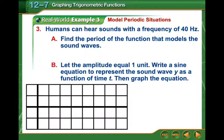The next one: human ears can hear sounds with a frequency of 40 hertz. We want to find the period of the function that models the sound waves. We also need to come up with what the function is, right? So the first part, the period. The thing about this, period is called T, capital T in physics, and it is 1 over the frequency. Here we're given our frequency, so our period is 1/40, one-fortieth.